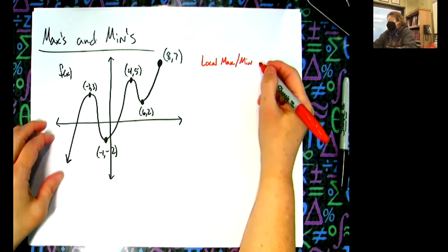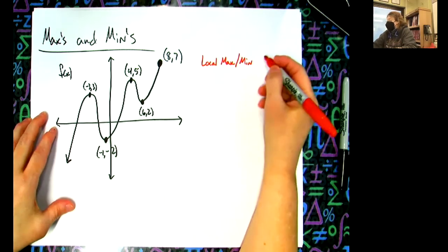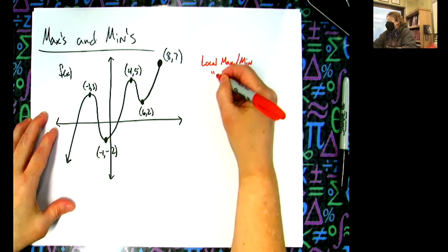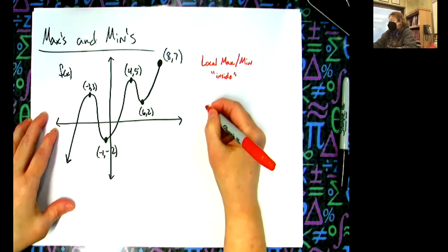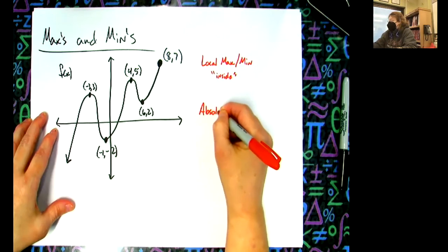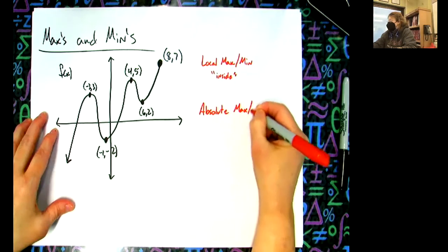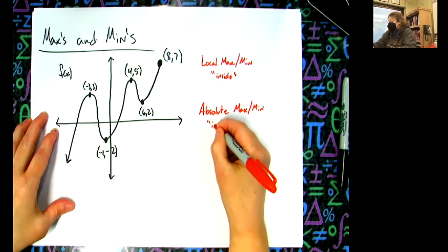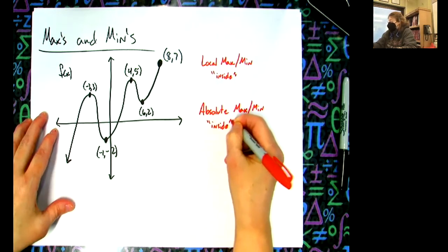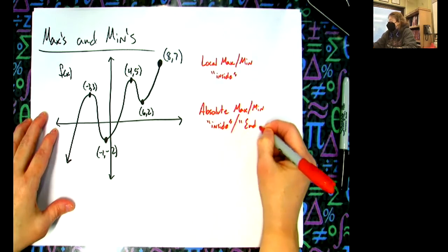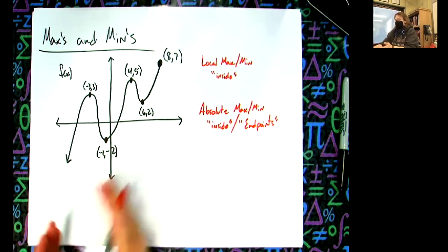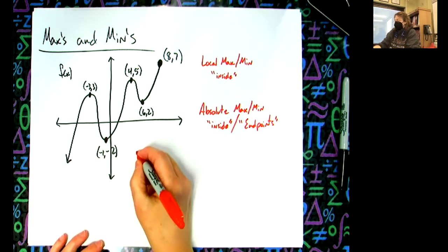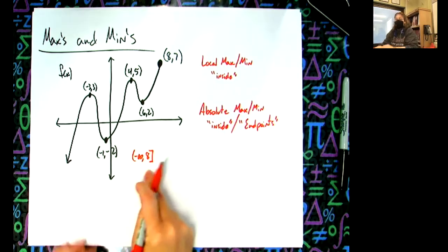We can have local max and mins, which are basically on the inside of the function. And then we're going to have absolute maxes and mins, which can be on the inside, but can also be on the endpoints. And this one, I have a half open interval. This function is defined on the interval from negative infinity to 8. This is a half open interval.